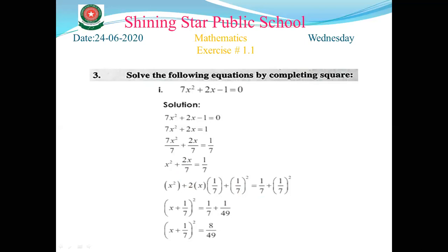In the next step, we make the formula on the left-hand side: a² + 2ab + b² = (a + b)². In this question, a is x and b is 1/7. So the left side becomes (x + 1/7)².